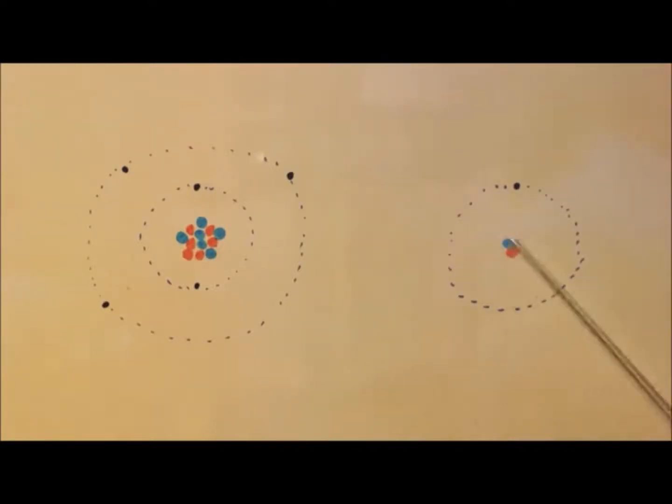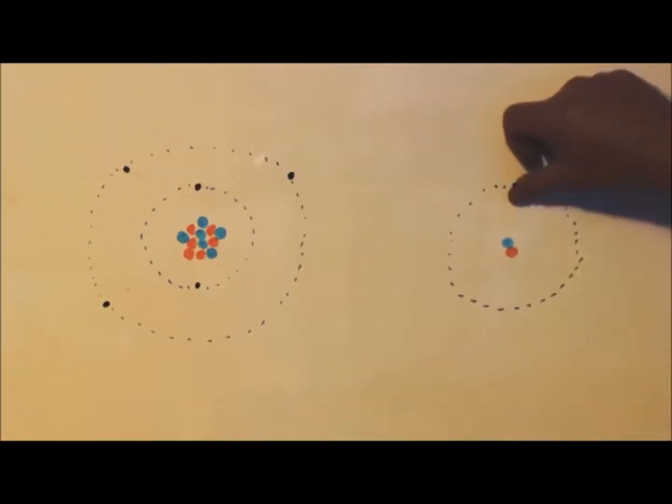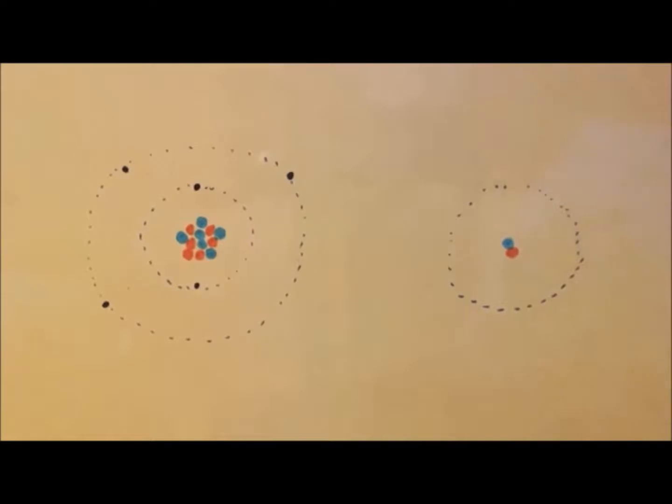Now look at this hydrogen - same deal. It's number one on the periodic table so I gave it one proton, one neutron and one electron. If I take the electron away you'll have a proton and a neutron.